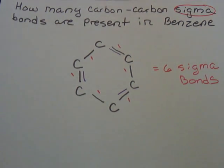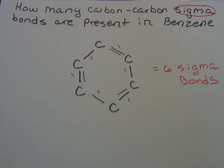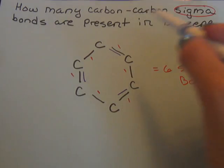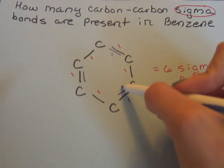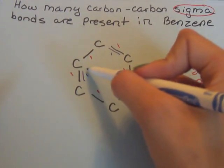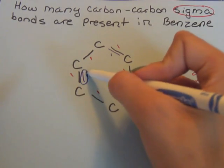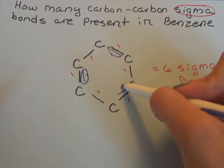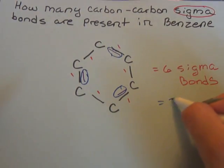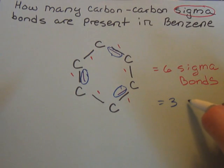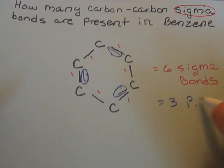And then if they were to ask you how many pi bonds are present, you would exclude all the ones we counted and only count the double bond portion. So technically it would be one, two, three — so you would have three pi bonds.